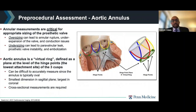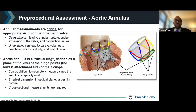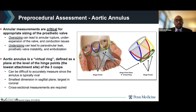Accurate measurements of the aortic annulus are critical for appropriate sizing of the prosthetic valve. Oversizing can lead to annular rupture, under-expansion of the valve, and conduction issues. Undersizing can lead to paravalvular leak, prosthetic valve instability, or even embolization. The aortic annulus is known as a virtual ring in the literature. It is defined as the plane at the level of the hinge points — the lowest attachment sites of the three cusps. Since the annulus is typically oval, the smallest dimension is in the sagittal plane and the largest is in the coronal plane, making cross-sectional measurements critical.